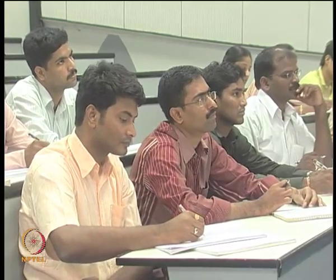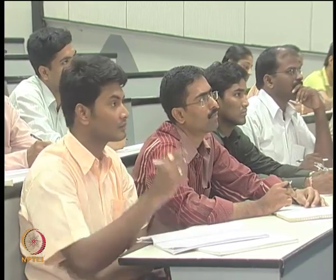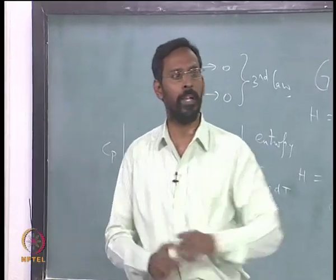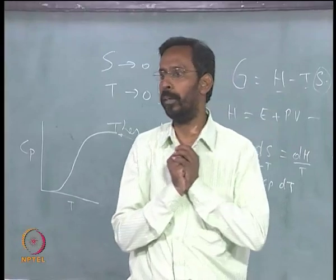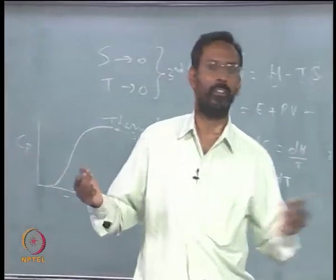Thermal entropy is bound to be there, whether it is ordered or disordered structure. Only difference between the two is, if it is perfectly ordered, it will not have a configuration entropy. It will have only one type of entropy, which is thermal entropy. Otherwise, if it is disordered, it will have both of them.